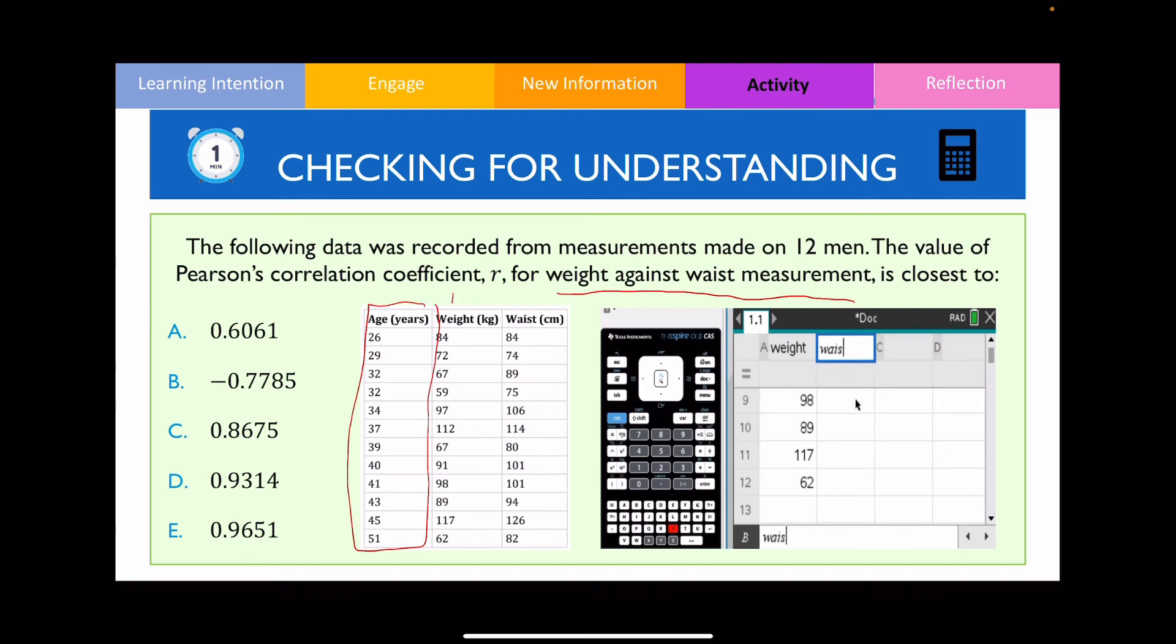Now you need to identify the explanatory variable as well as the response variable. In this example over here, weight is going to be the explanatory variable as this will impact your waist size. So that's going to be a response variable. Remember, this is going to be plotted along the x-axis, that's plotted along the y-axis.